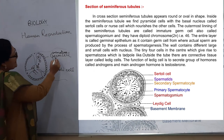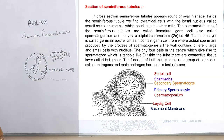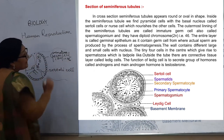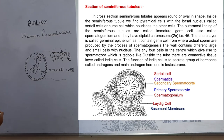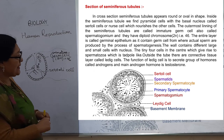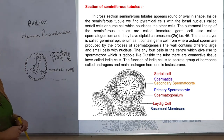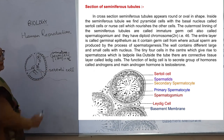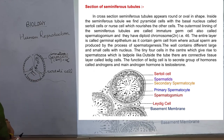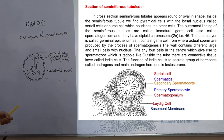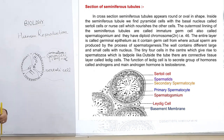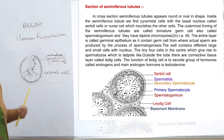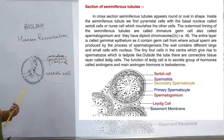The germ cells are diploid, 2N = 46. The entire layer is called germinal epithelium, as it contains germ cells from where actual sperms are produced by the process of spermatogenesis. The male gamete is called sperm, and sperm formation is called spermatogenesis.